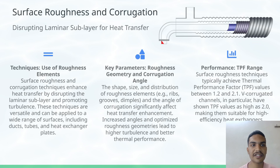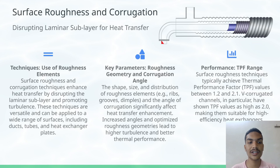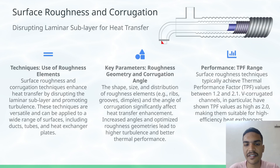The next technique is Surface Roughness and Corrugation. These techniques enhance heat transfer by disrupting the laminar sublayer and promoting turbulence. They can be used for a wide range of surfaces including tubes, ducts, and heat exchanger plates. Key parameters are geometry and corrugation angles.